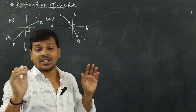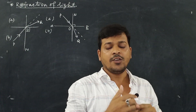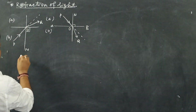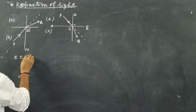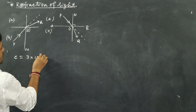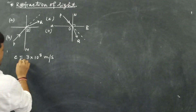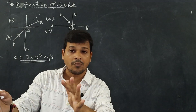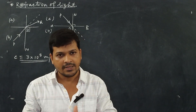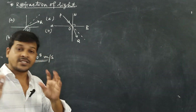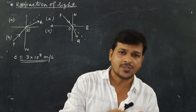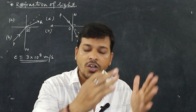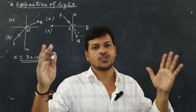Why does this happen? In the case of light, if we consider the speed of light in vacuum or in air, that is C equal to 3 × 10⁸ meters per second in vacuum or clean air. But when light enters another medium like glass or water, the speed of light changes. When the speed changes, light follows a path to reach its destination in the shortest way.